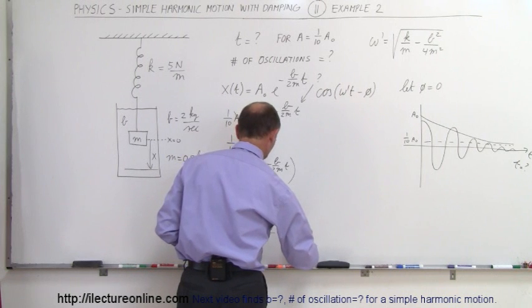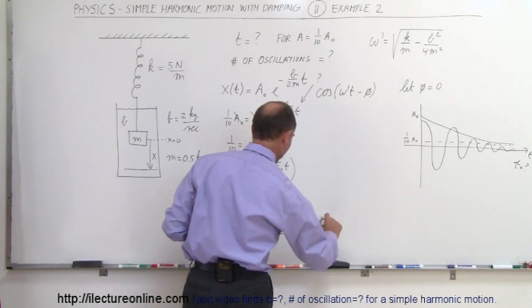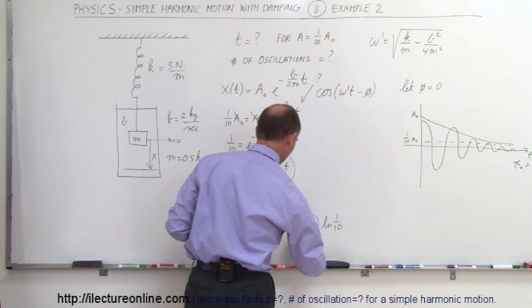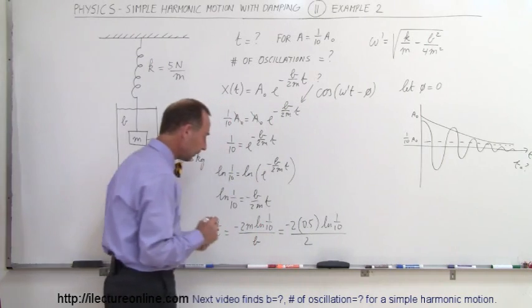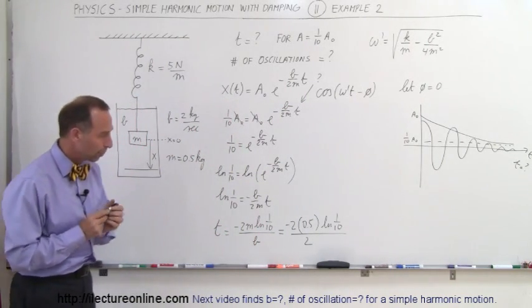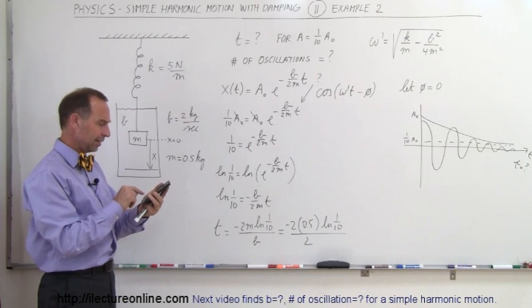Now all I have to do is plug in the numbers. And so this is equal to minus 2 times m, which is 0.5, times the natural log of 1 tenth, all divided by b, and in this case b is equal to 2. And so that gives us minus 0.5 times the natural log of 1 tenth. And with my calculator, let's see what we get.